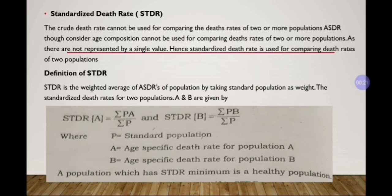So what does that mean? The crude death rate cannot be used to compare 2 or more populations. Crude death rate is a very simple comparison of population and death. Similarly, ASDR — that is age-specified death rate — can only compare within a single age group and cannot compare 2 or more populations. For comparing 2 or more populations, we use STDR, that is standardized death rate.